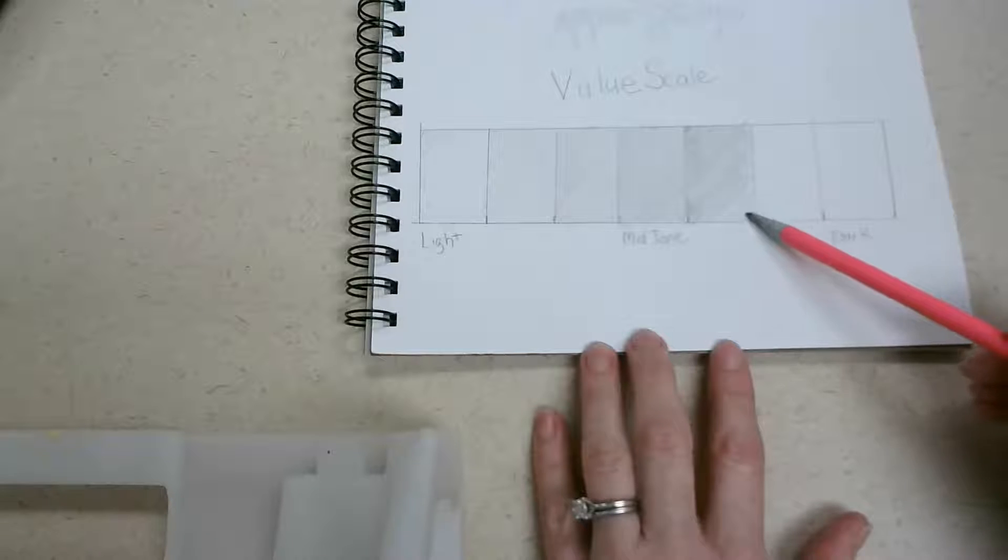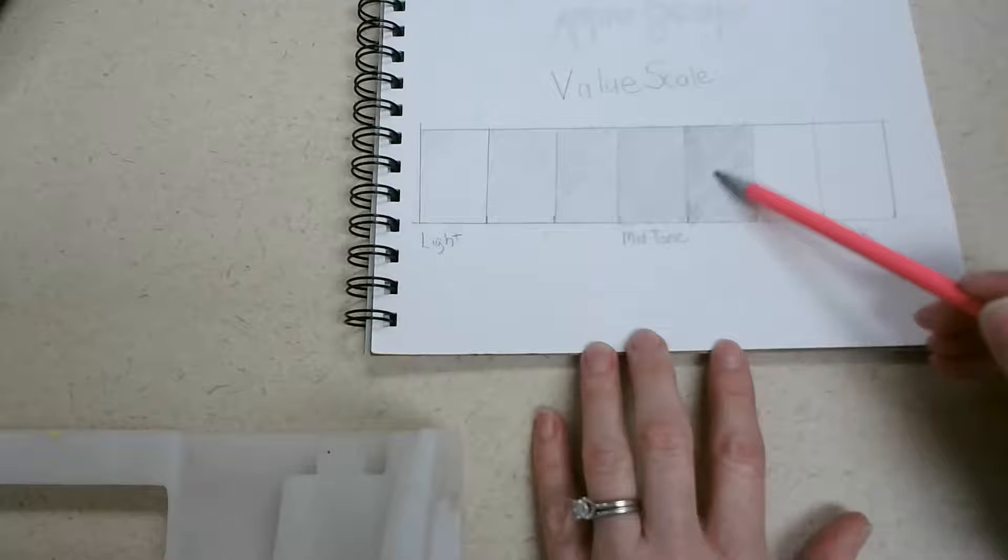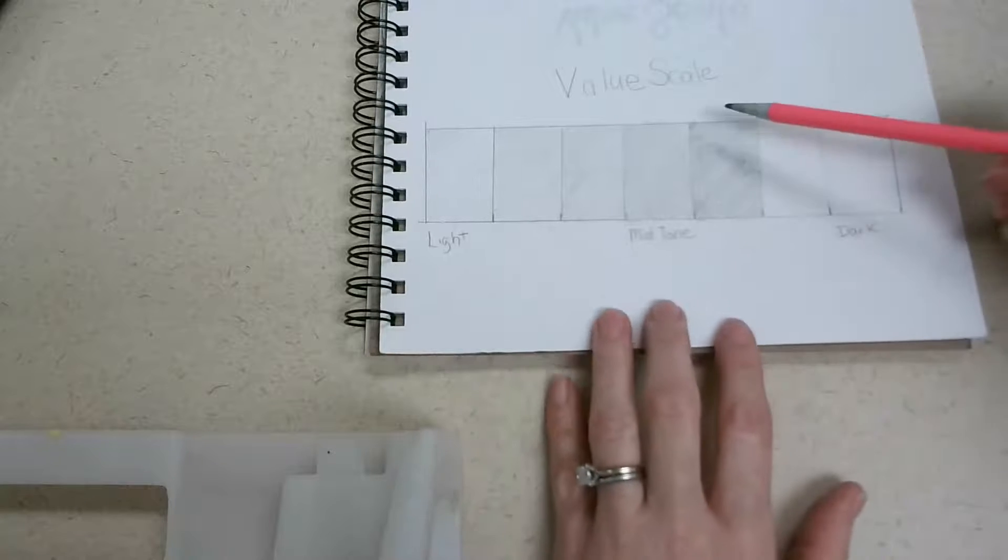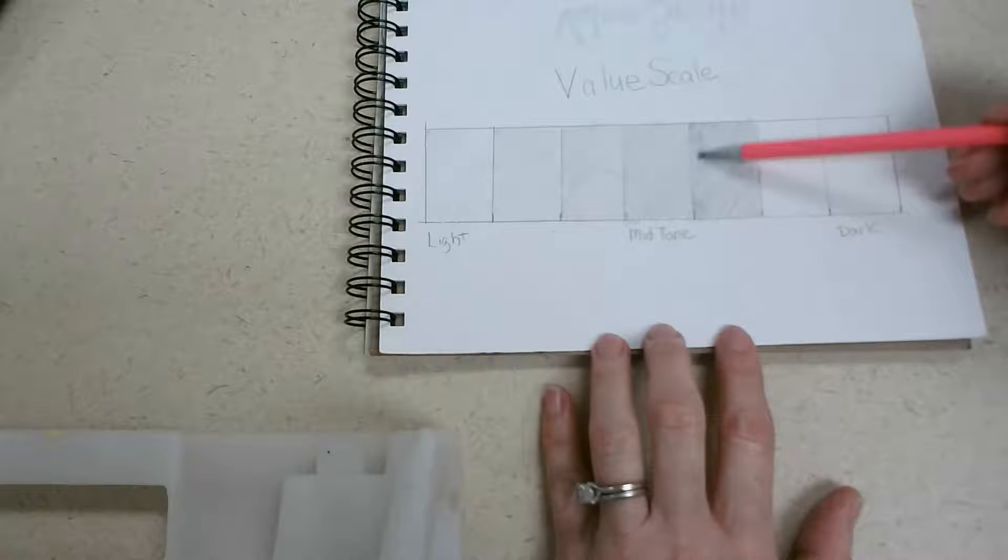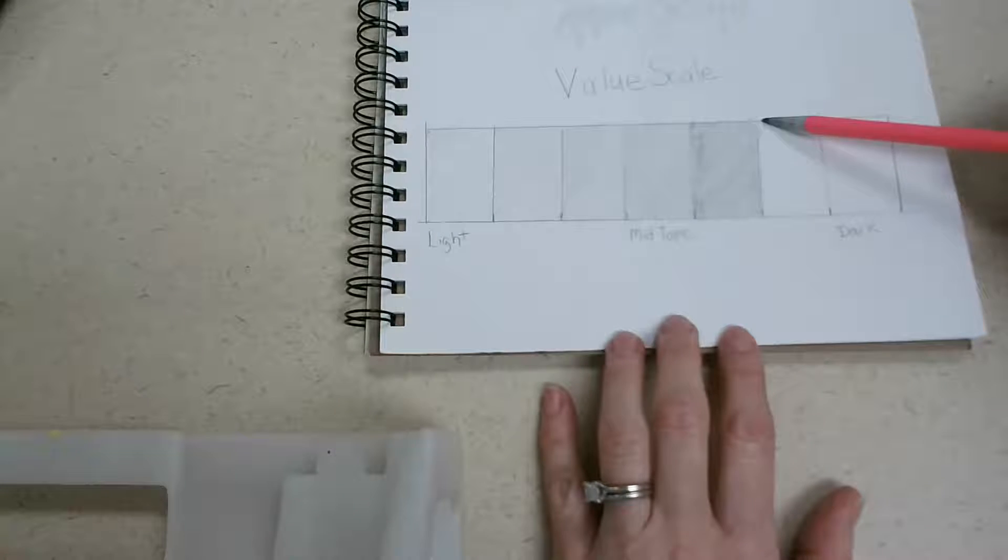See how I'm getting some patchiness in mine? It's because I'm not applying perfectly even pressure. In some spots I have it a little bit darker. Could also be maybe that something is on my page, it's maybe preventing it from being a smooth value. That might happen, it's okay.